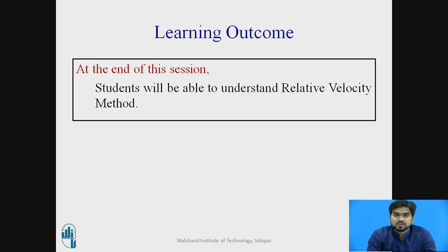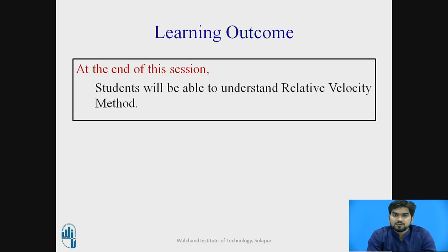First of all, you can think about where is the necessity to find out the velocity, or in which case we have to find out the velocity. Suppose if you consider the slider crank mechanism, we are giving input to the shaft. From the shaft, we are knowing the angular velocity of the crank. So we have to find out the velocity of the slider. At that time, we can use this relative velocity method for finding the velocity of the slider, as well as we can find out the angular velocity of the connecting rod.